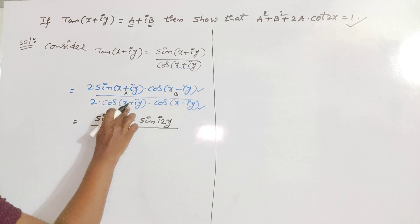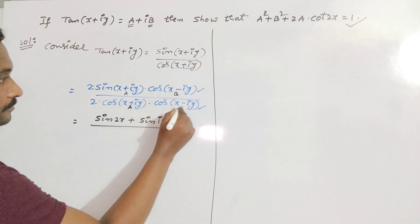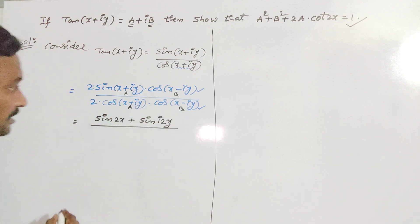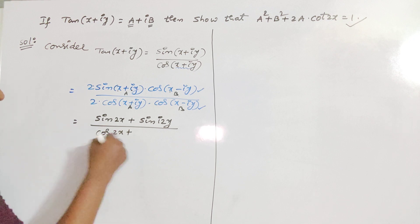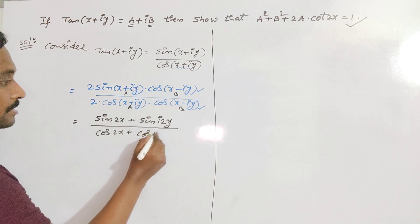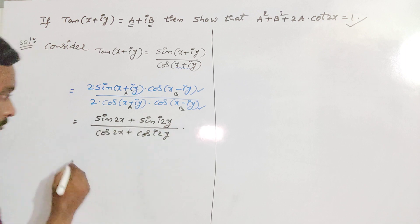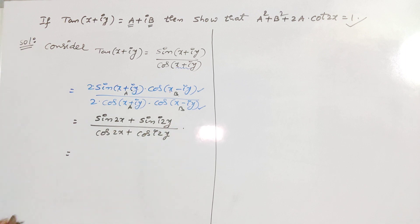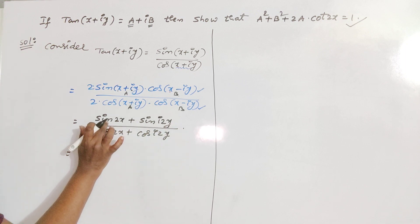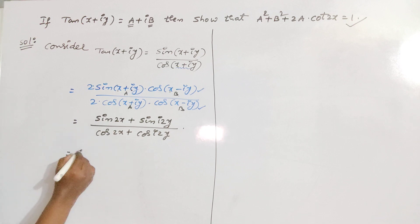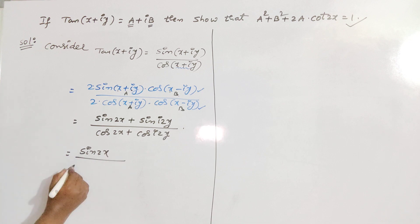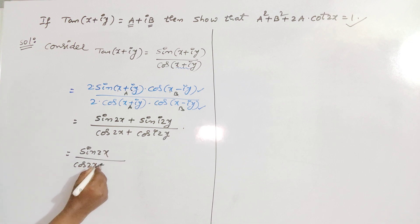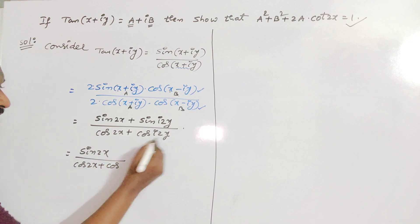In the denominator, we use 2·cosA·cosB: cos(a+b) gives cos(2x), plus cos(a−b) gives cos(i·2y). I will separate the terms directly. The first term by division is sin(2x) divided by cos(2x) + cos(i·2y).